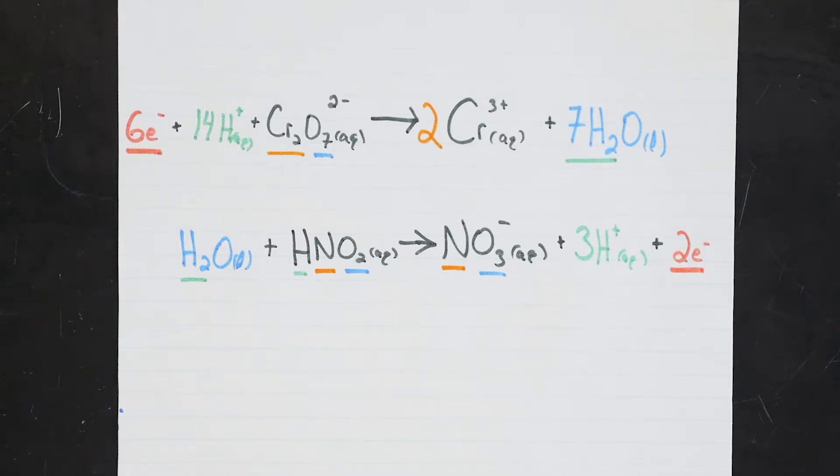Now that each half reaction is balanced, we need to put them together. This is ordinarily done by writing all of the components that occur on the left of each half reaction together on the left of the overall equation, and likewise for the right hand sides. However, before we can do that, we need to make sure that each half reaction has the same number of electrons in it. We need to do this so that the electrons will cancel, and we won't be left with any excess electrons in our equation, because that would be very odd.